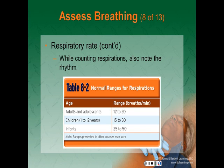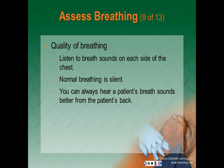While counting respirations, also note the rhythm. If the time from one peak chest rise to the next is fairly consistent, they are considered regular; if respirations vary or change frequently, that is irregular. Normal ranges are: adults and adolescents 12 to 20, children 1 to 12 at 15 to 30, and infants can breathe up to 50 or 60 times a minute.